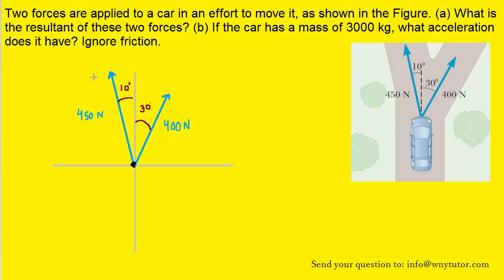In order to find the resultant of these two forces, what we need to do is break them up into their y and x components. So for example, consider the 400 newton force first. We can go ahead and draw a y component that projects upward and an x component that projects to the right. When we draw those components, we can see that we have a right triangle.